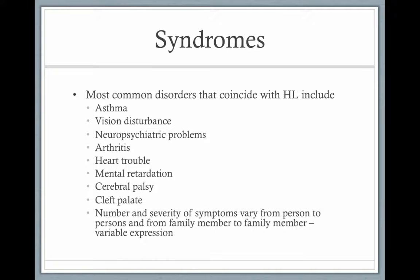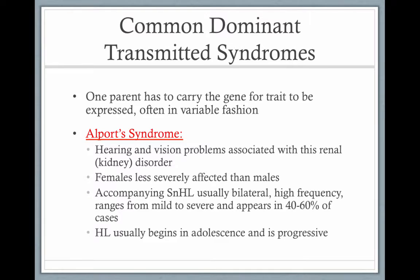For a dominant syndrome, only one parent has to carry the gene. Alport syndrome involves hearing and vision problems associated with kidney failure — this is because in embryological development they develop along the same track. The hearing loss in Alport syndrome usually begins in adolescence and is progressive.